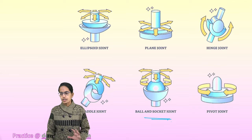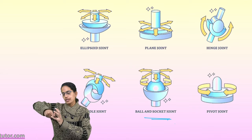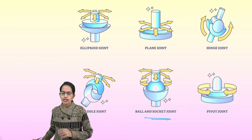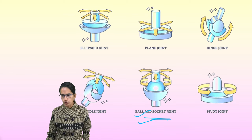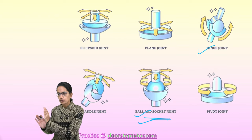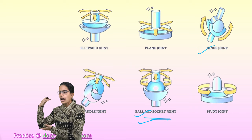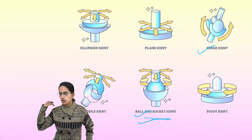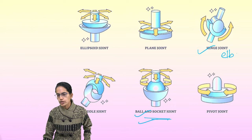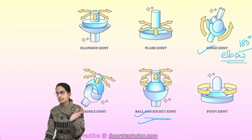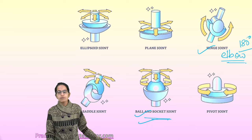Some important specific joints: the ball and socket joint, where a ball fits into a socket allowing full rotation in all directions — the shoulder and hip are good examples. The hinge joint works like a door, opening and closing. The elbow and knee are hinge joints with 180-degree movement in one direction only, and cannot go in the opposite direction.